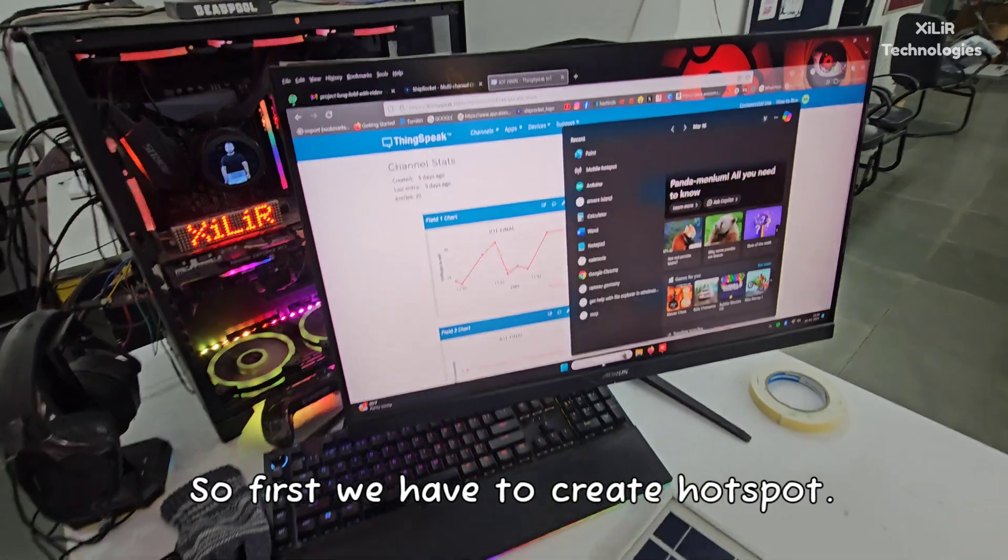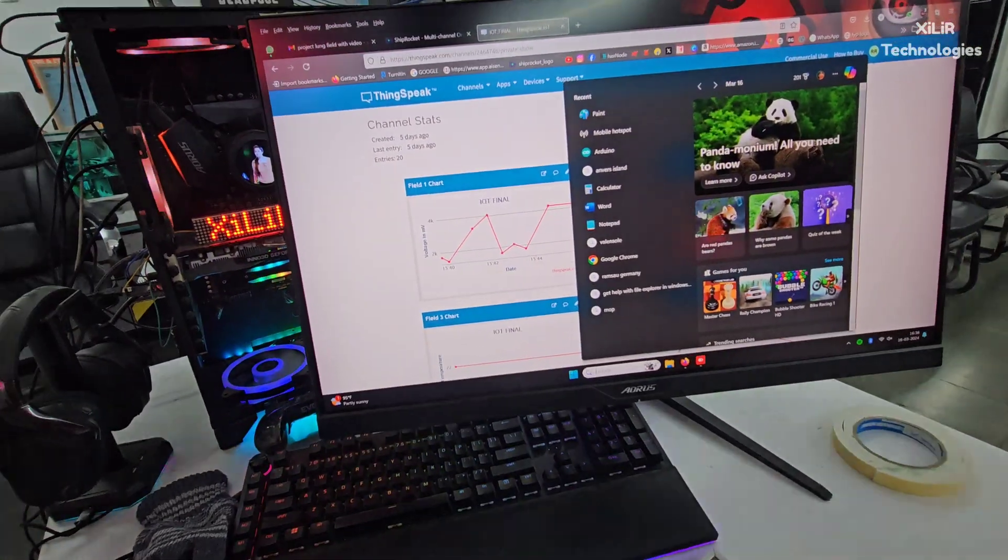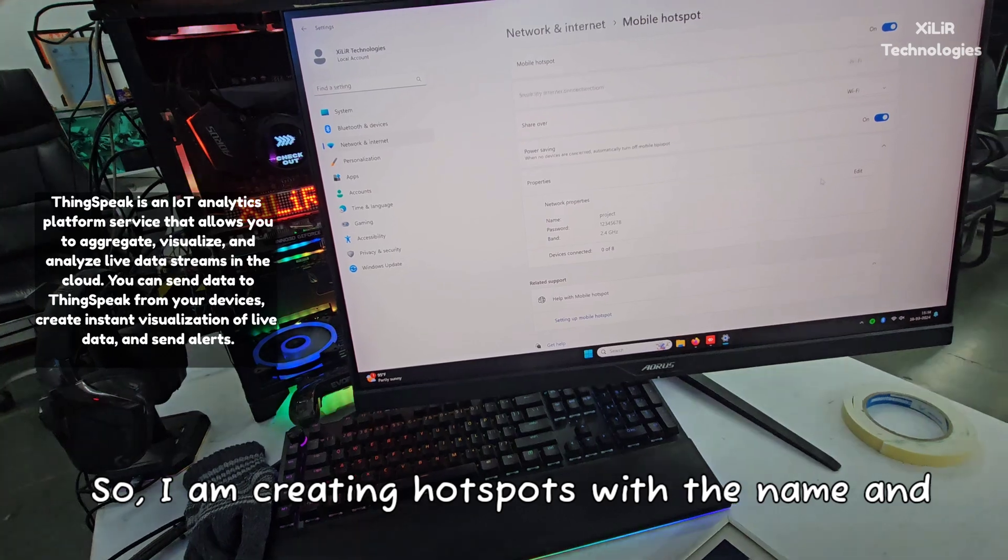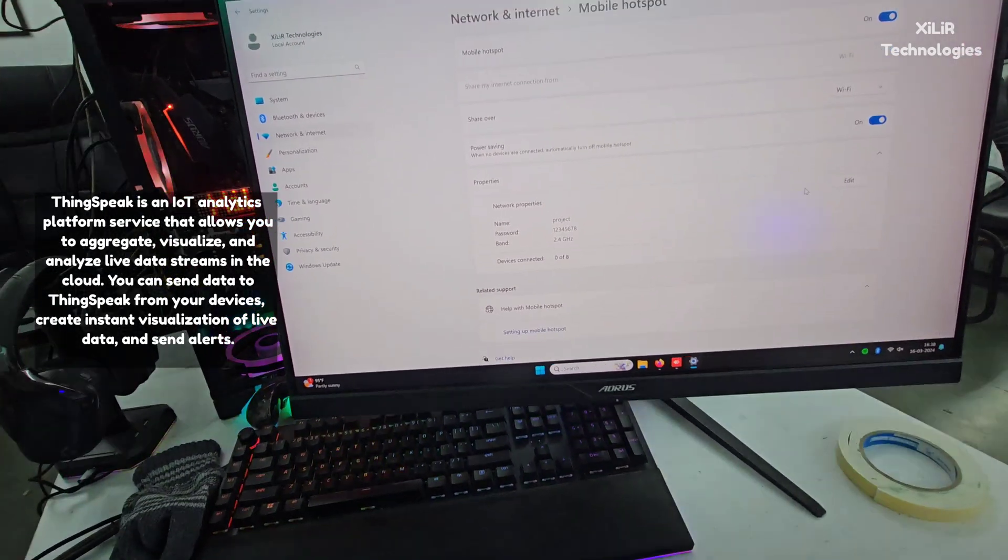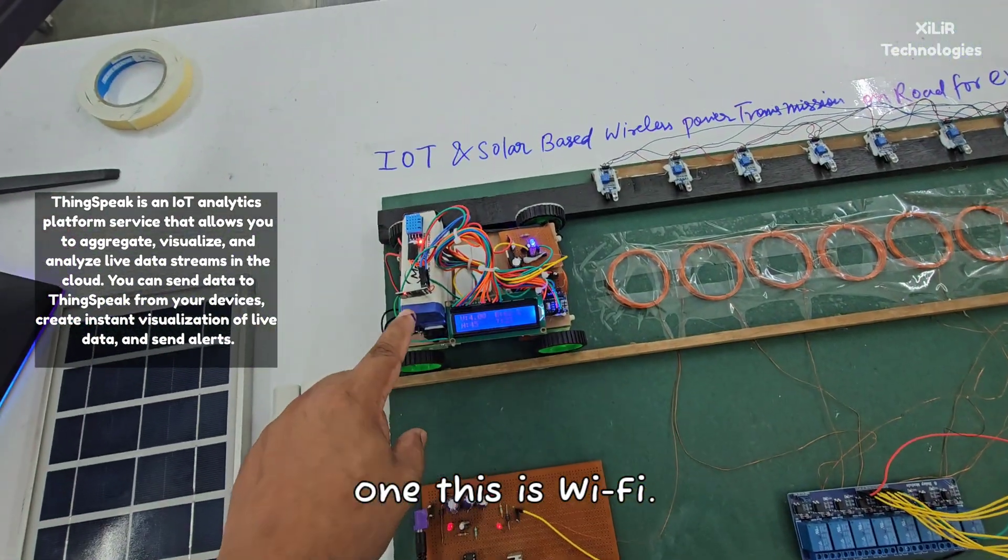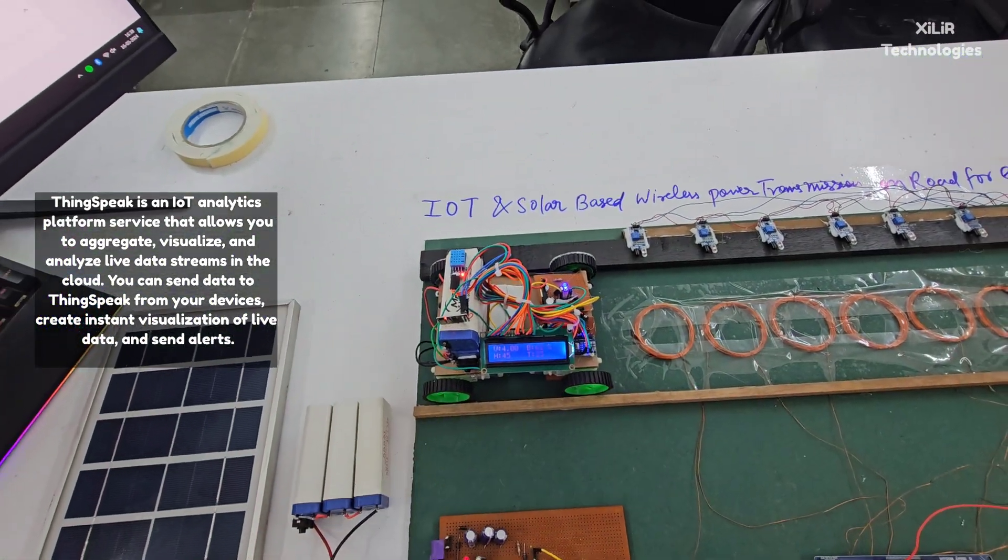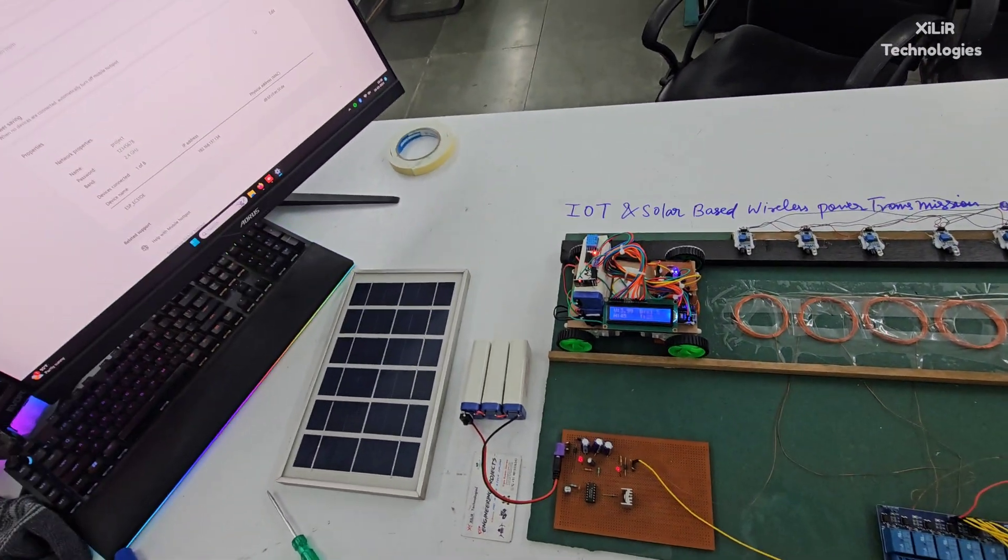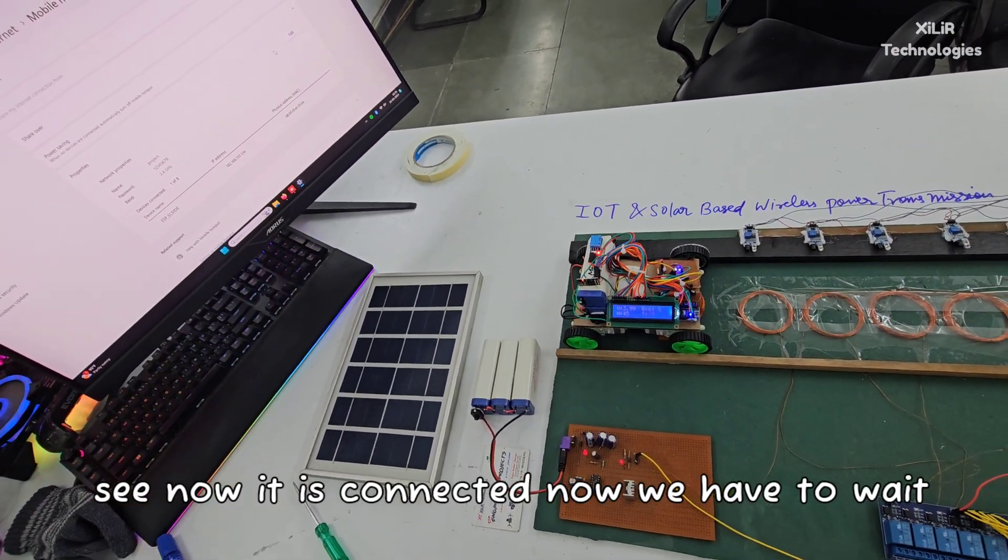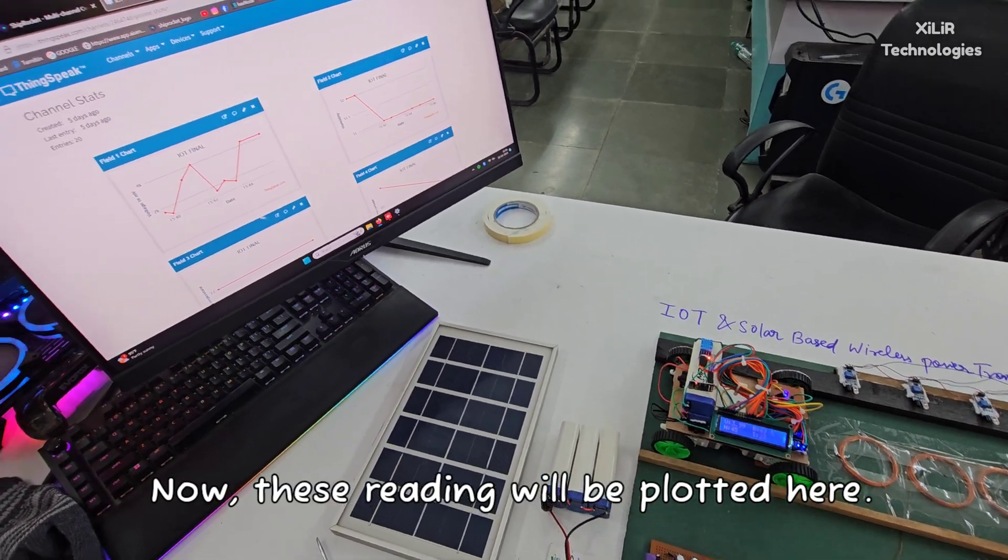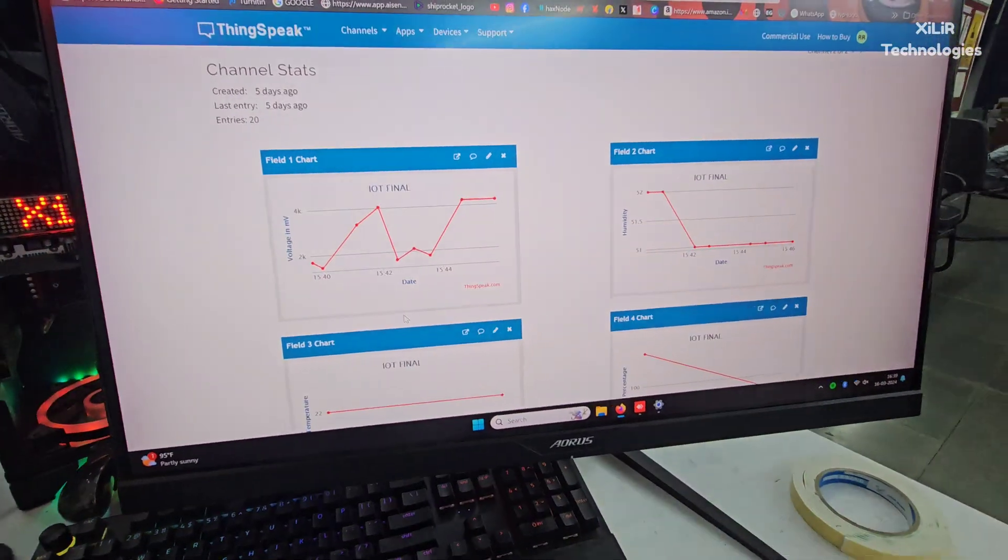I will show you how to connect this. First we have to create a hotspot, so I am creating a hotspot. We have to wait for one device to be connected here, which is this WiFi module. Now let's wait for some time. Now it is connected.